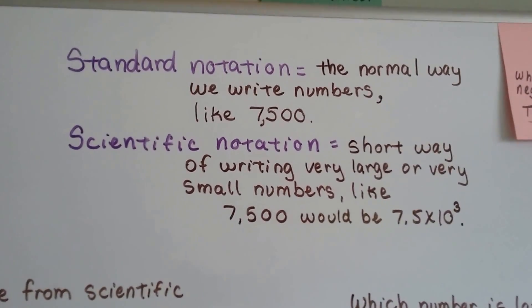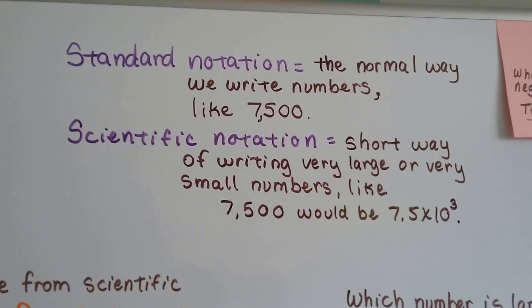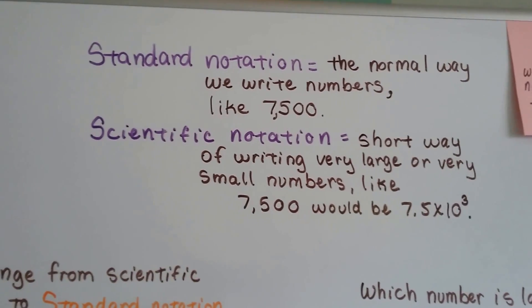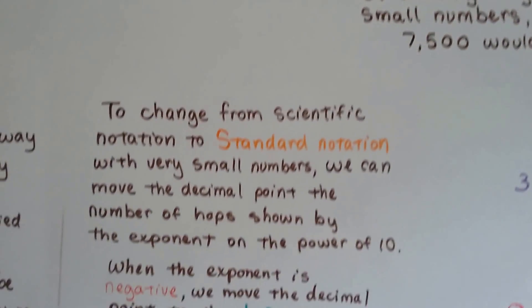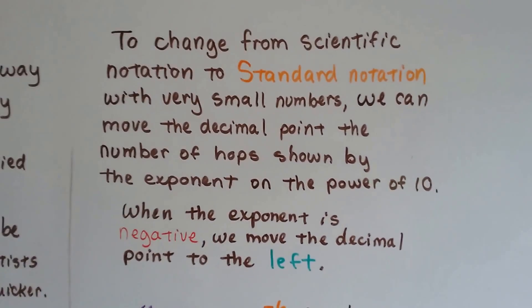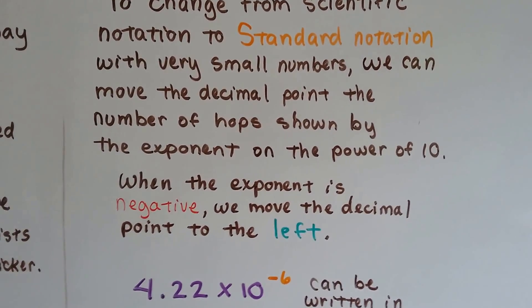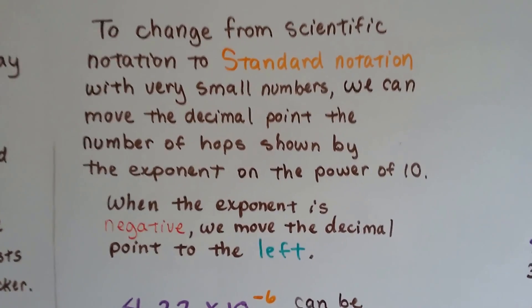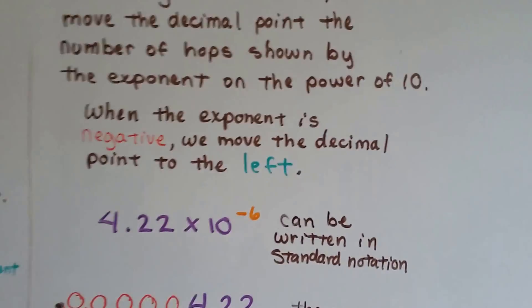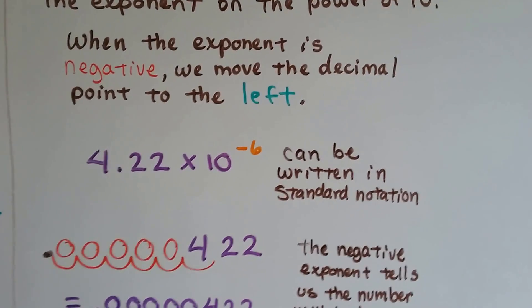Now we're going to change scientific notation back into regular numbers, the standard notation. To change from scientific notation to standard notation with very small numbers, we can move the decimal point by the number of hops shown by the exponent on the power of 10. When the exponent is negative, we move the decimal point to the left.